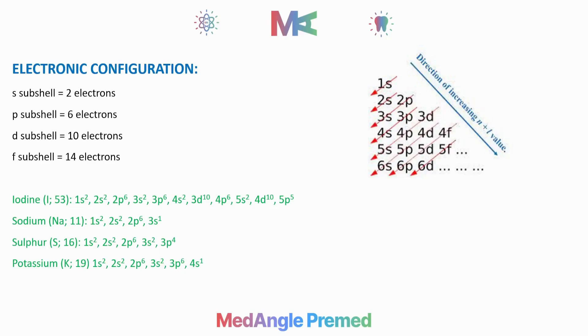Potassium has atomic number 19, or 19 electrons. 1s², 2s², 2p⁶, 3s², 3p⁶, 4s¹. Again, this is not our answer.